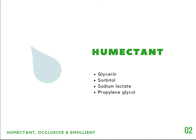Glycerin is the most frequently used humectant because it's inexpensive and easier to find — you can even buy it from a drugstore. The only disadvantage is if you put too much glycerin in your cosmetic formulation, the end product will be very sticky. And who wants a sticky moisturizer, right?